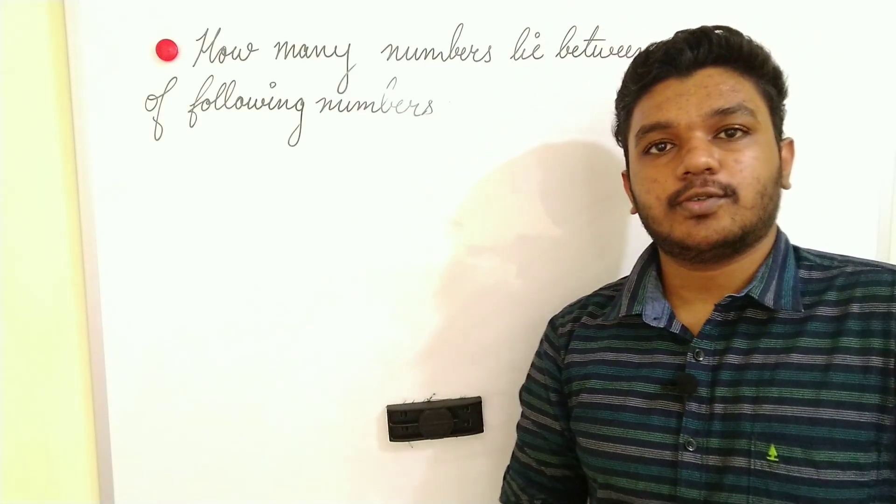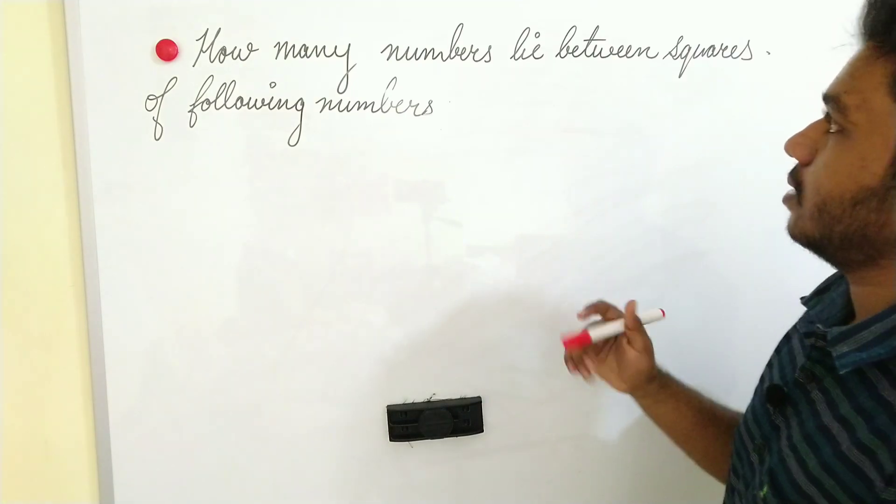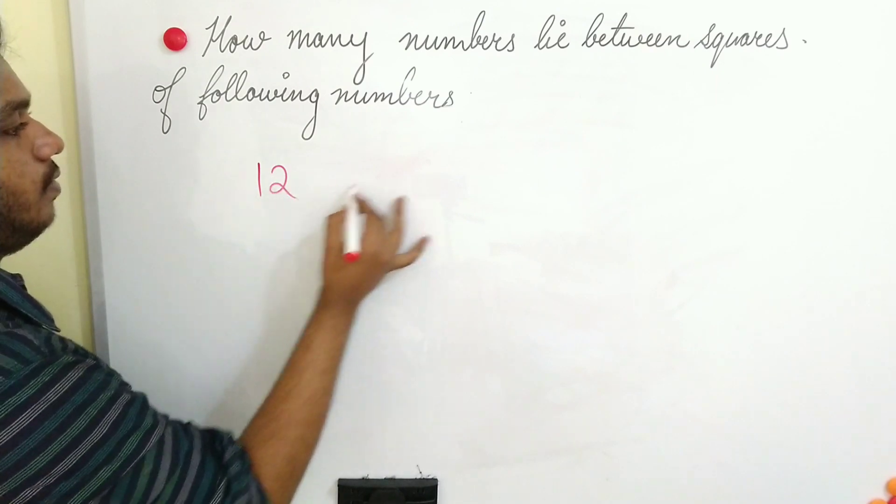Hello guys, in this video we are going to solve one problem as you can see on the board. How many numbers lie between squares of following numbers? Let us take one example: 12 and 13.